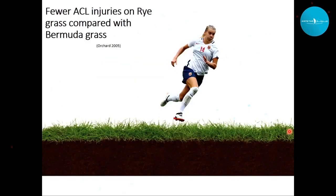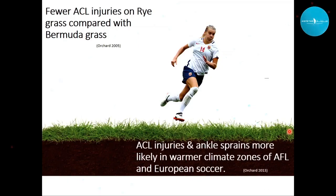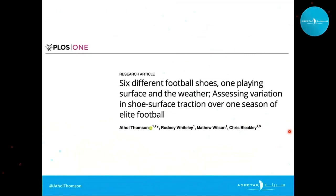Grass species can also affect shoe-surface traction and possibly injury rate. In Australian rules football, ryegrass — a cool-season grass — showed fewer injuries than Bermuda grass, a warm-season grass, which was attributed to climatic factors and possible shoe-surface interaction differences. This is also seen in European football, with warmer climate zones showing more ACL injuries and ankle sprains, while cooler climate zones had more Achilles tendon injuries.